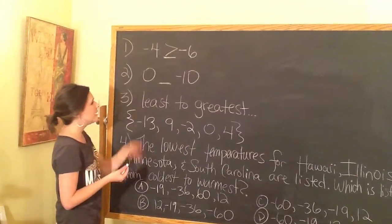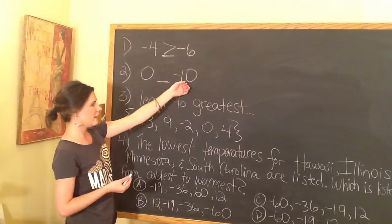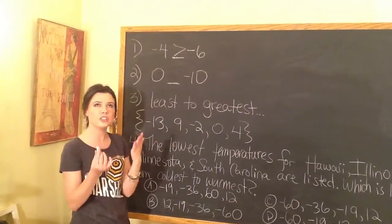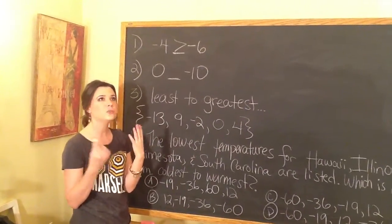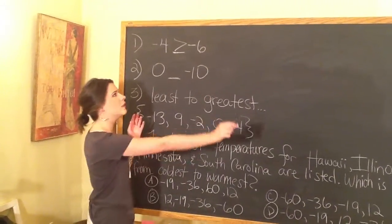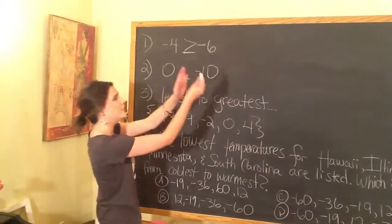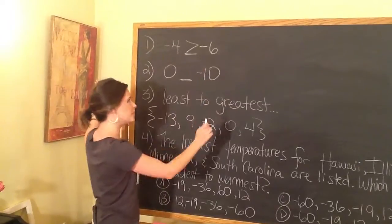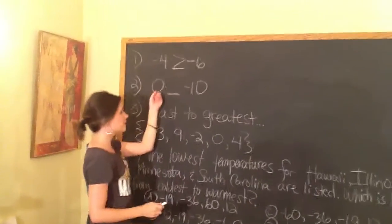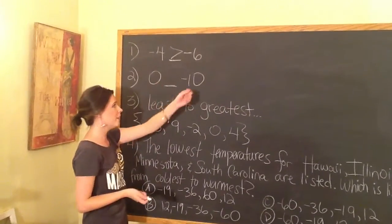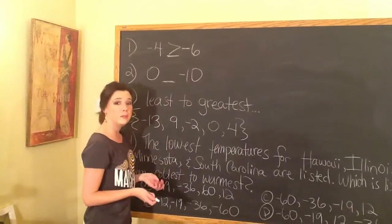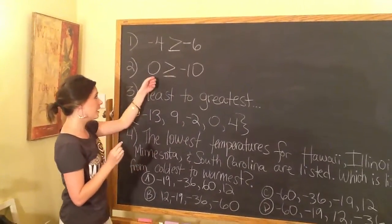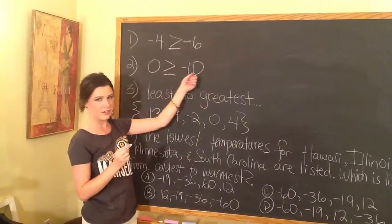Example number 2: we have 0 and negative 10. Picture the number line in your mind — which is furthest to the right? On the number line, negative 10 is way to the left and 0 is in the middle. Since 0 is the neutral number and negative 10 is a negative number, 0 is going to be bigger. So we draw the symbol to read: 0 is greater than negative 10.